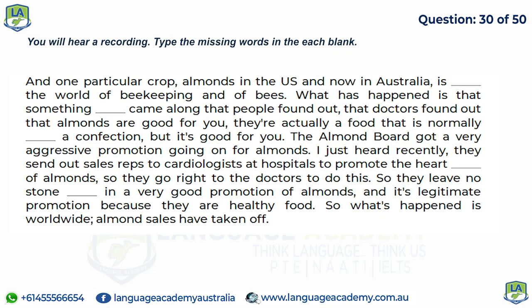One particular crop — almonds — in the U.S. and now in Australia is transforming the world of beekeeping. What happened is that doctors found out that almonds are good for you. The Almond Board launched an aggressive promotion, sending sales reps to cardiologists at hospitals to promote the heart benefits of almonds. It's a legitimate promotion because almonds are a healthy food, and as a result worldwide almond sales have taken off.